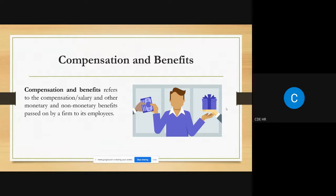Compensation and benefits covers both monetary and non-monetary aspects for employees. Monetary aspects include salaries and wages. Non-monetary aspects include dearness allowances, house rent allowances, and similar benefits.